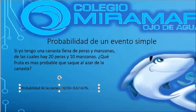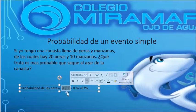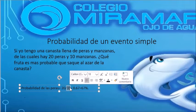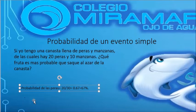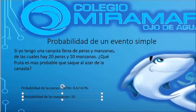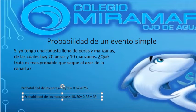La operación que tengo que hacer es dividir los casos favorables entre el total de casos, que son 30, para obtener mi probabilidad. Ahora voy con el siguiente evento simple: la probabilidad de las manzanas. Esto es igual — de igual forma — los casos favorables son 10 entre el total de casos que serían 30. Esto es igual a 0.33, y lo convierto al tanto por ciento: 33%.